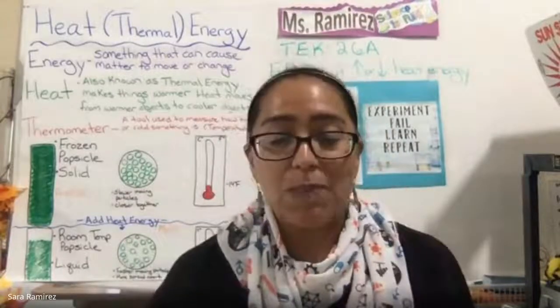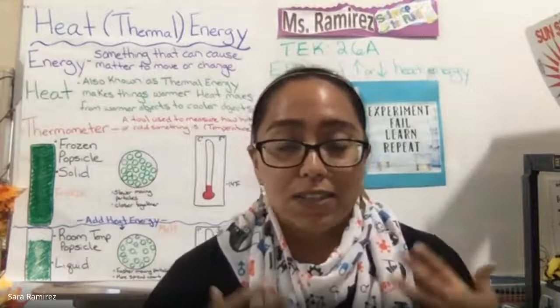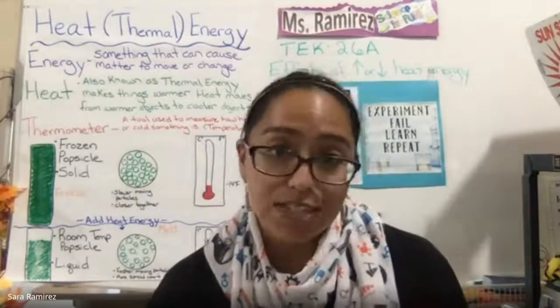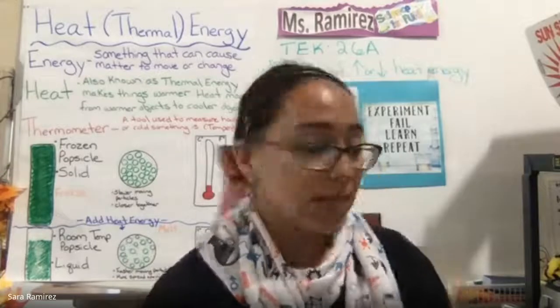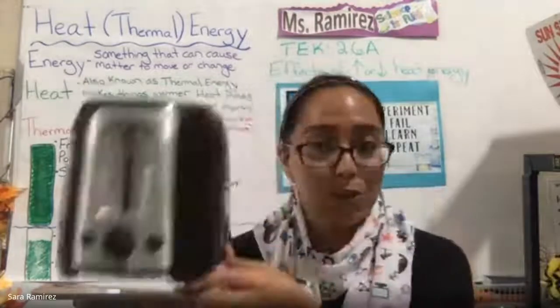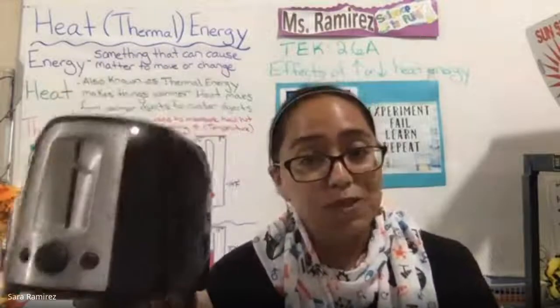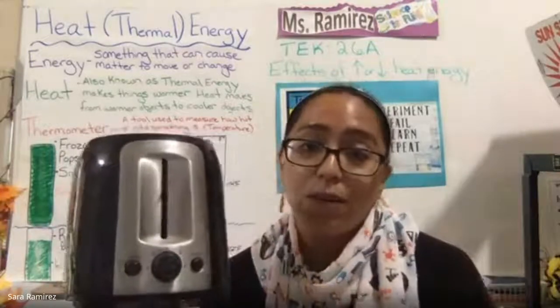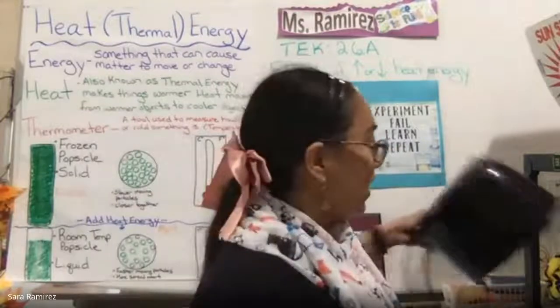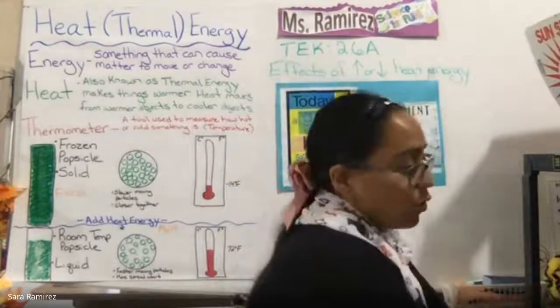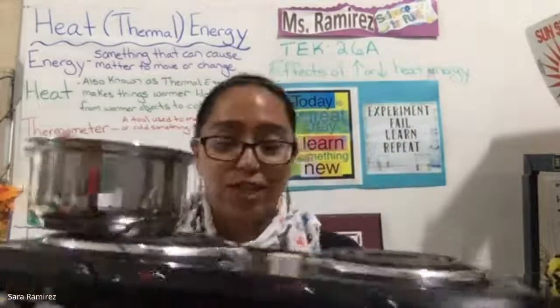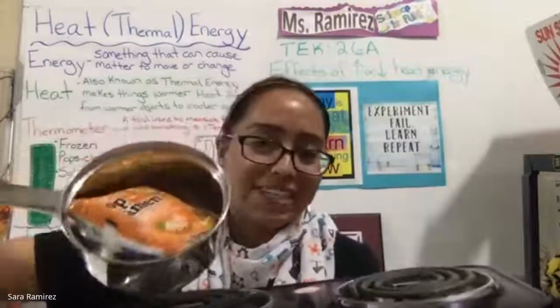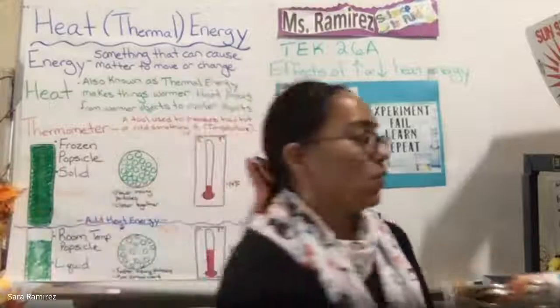Now let's talk about how kitchen appliances can be used to increase or decrease heat energy and how that impacts our food. You're probably familiar with a toaster — think about what happens to bread after you put it in the toaster and how it changes. The next thing is a portable electric stove top — I have a little pot and a container of ramen noodles. Think about how heat impacts pasta and rice, and how heat changes and impacts our food.